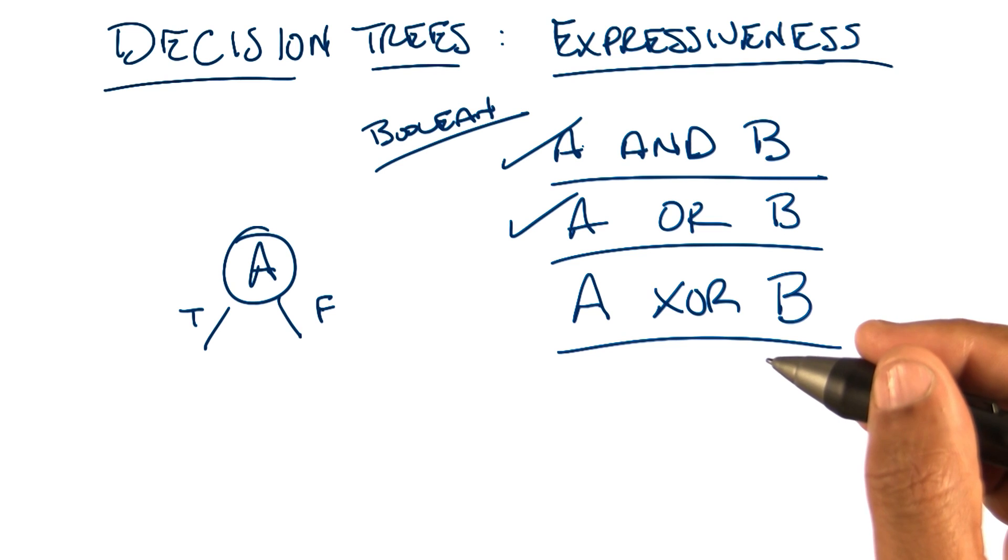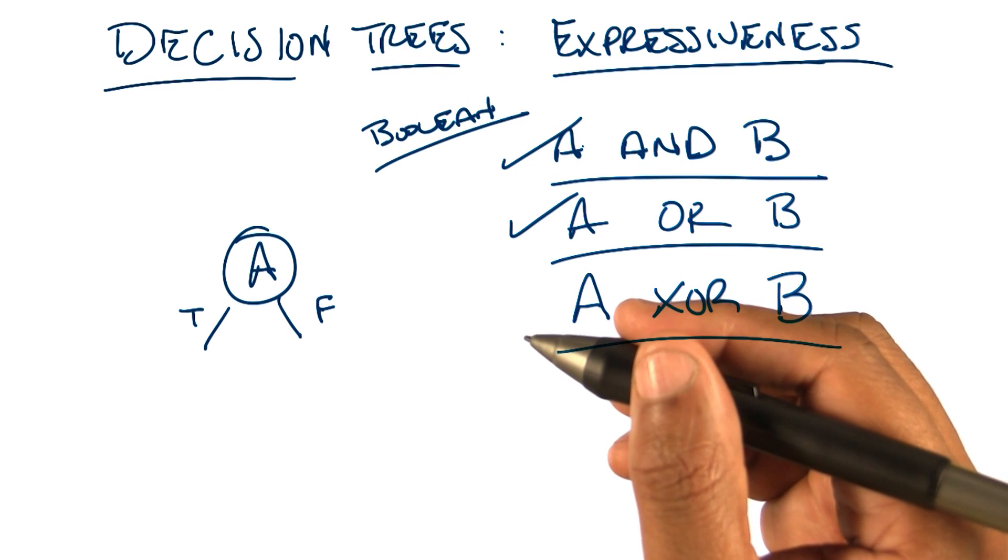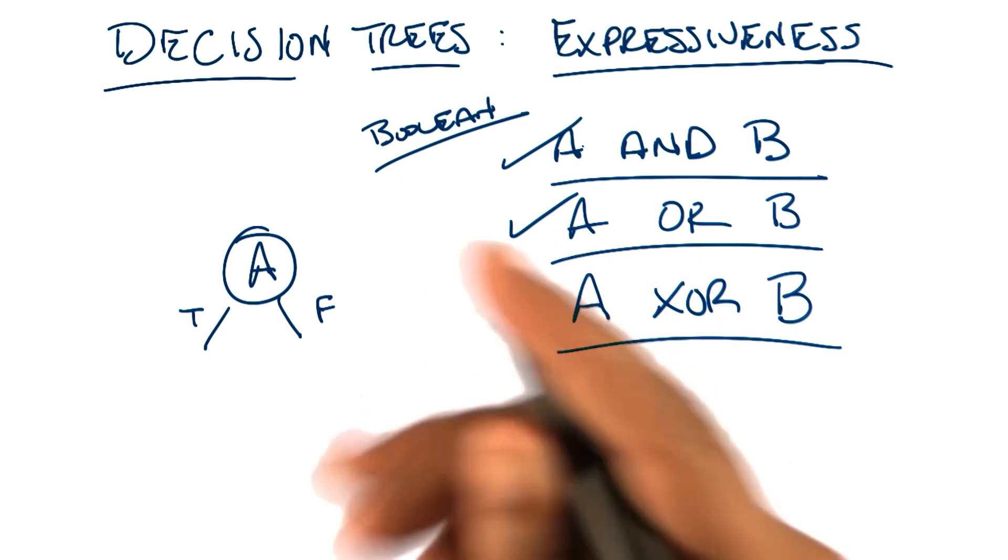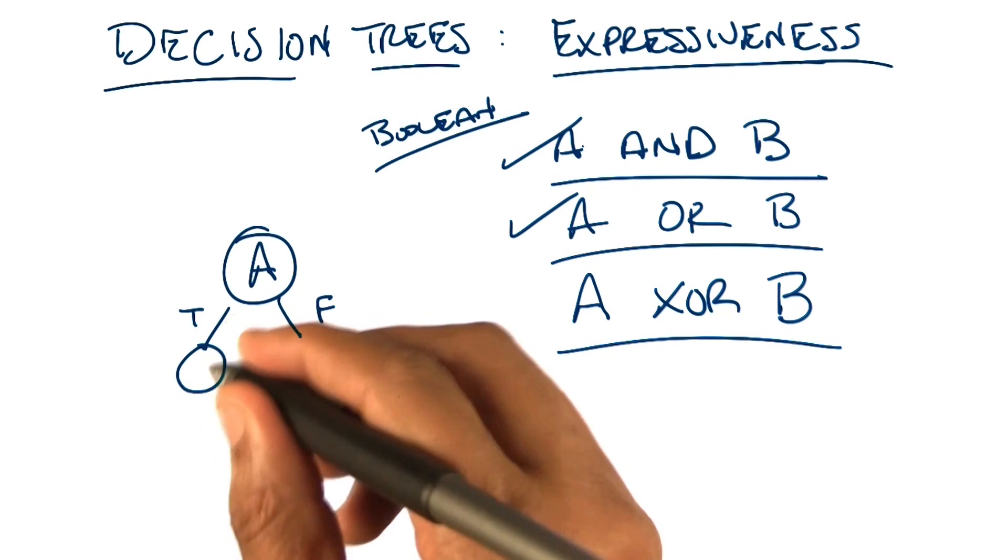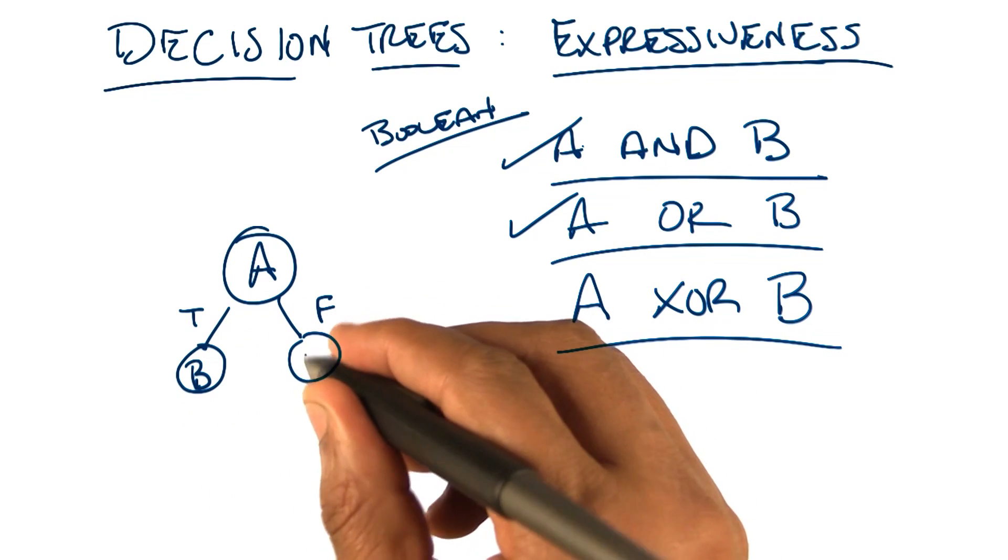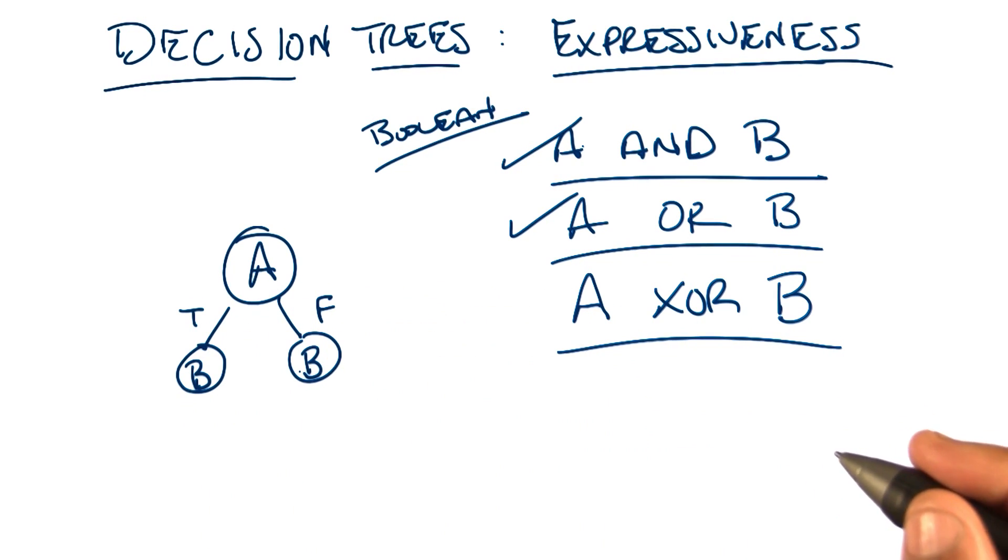That's right. So if A is true, the output might be true or false. It depends on B. And if A is false, the output might be false or true. It depends on B. That's exactly right. So I guess, in both cases, we still have to split on B.